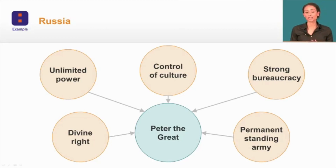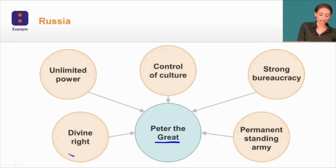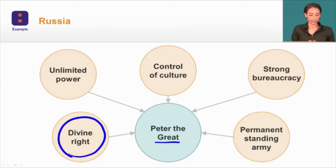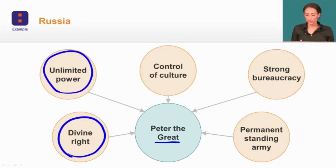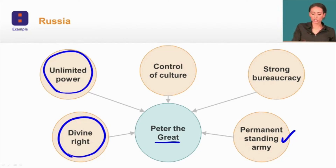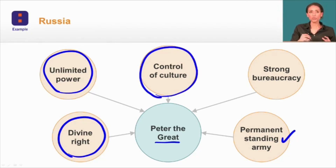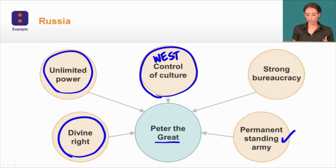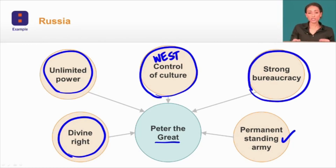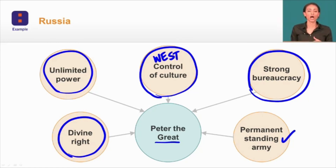Absolute rule in Russia begins to take shape under Peter the Great in very similar ways as in Spain and France. Peter saw himself as having a divine, God-given right to control Russian territory. Because he saw himself as having unlimited power, he developed a permanent standing army to protect his monarchy, tried to control Russian culture through a Westernization reform program — enacting Western practices all over Russia, specifically in his bureaucracy — and he forced nobles to cut their hair and change the way they dressed. He also promoted lower-ranking nobles who showed undying loyalty to him.